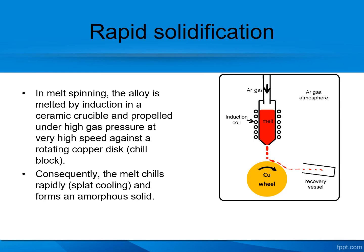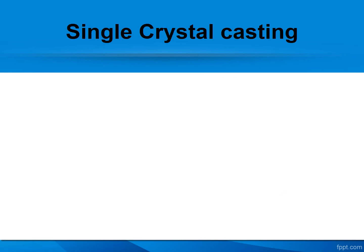In the metal spinning process, the alloy is melted by induction in a crucible and under high gas pressure sent at very high speed against a rotating copper disc — a chill block — so that it immediately solidifies.